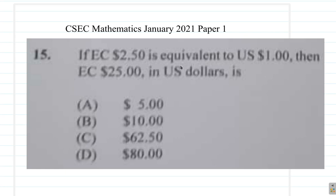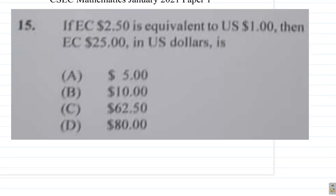If EC $2.50, that's Eastern Caribbean $2.50, is equivalent to $1 US dollar, then EC $25 in US dollars is.